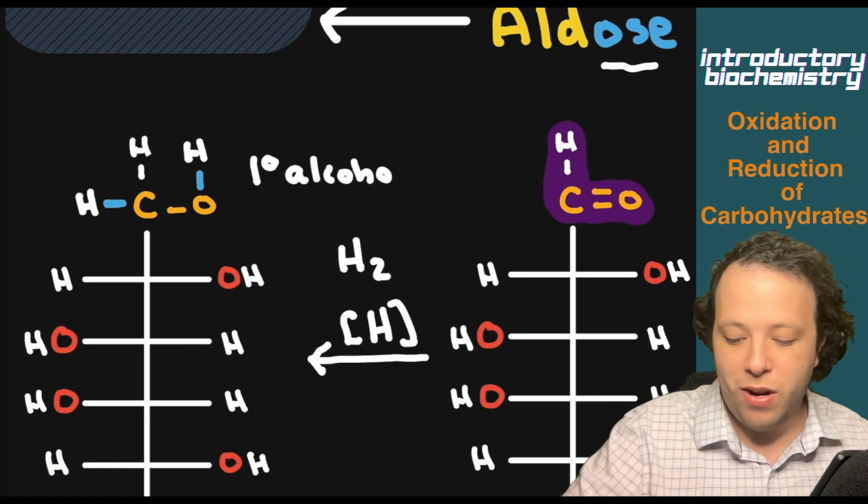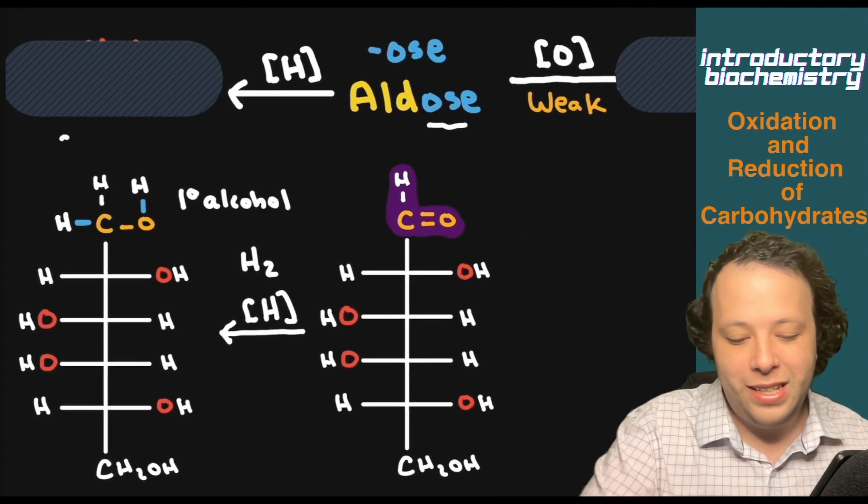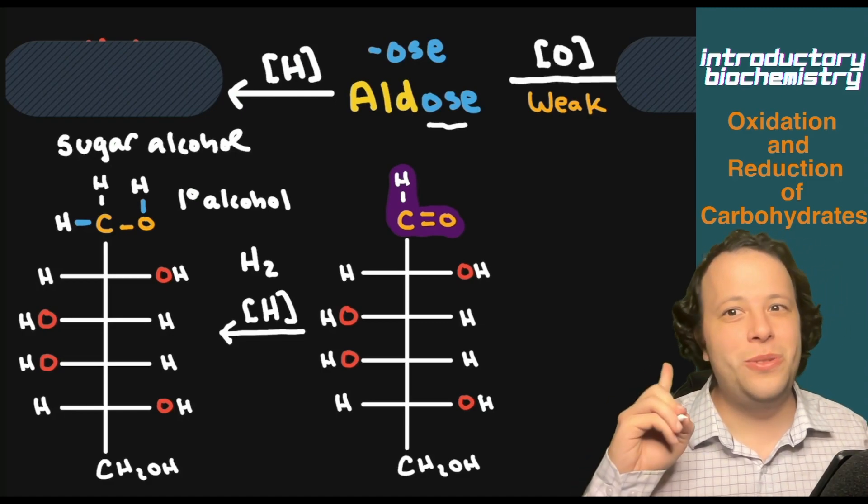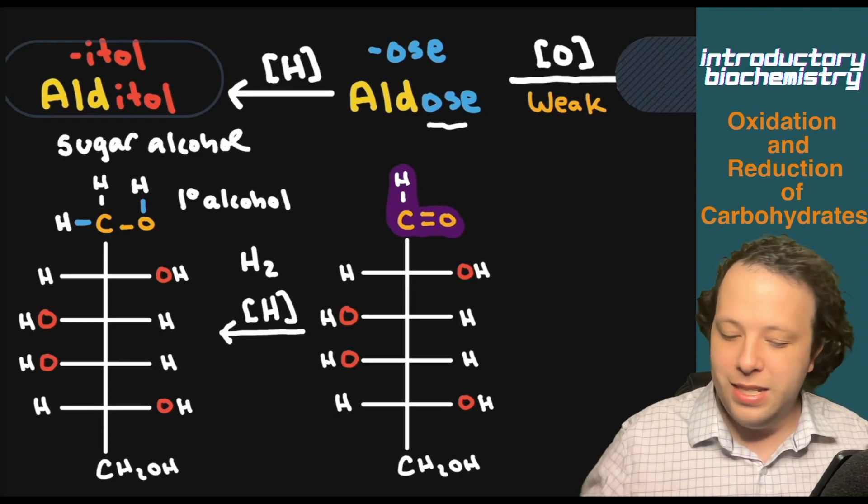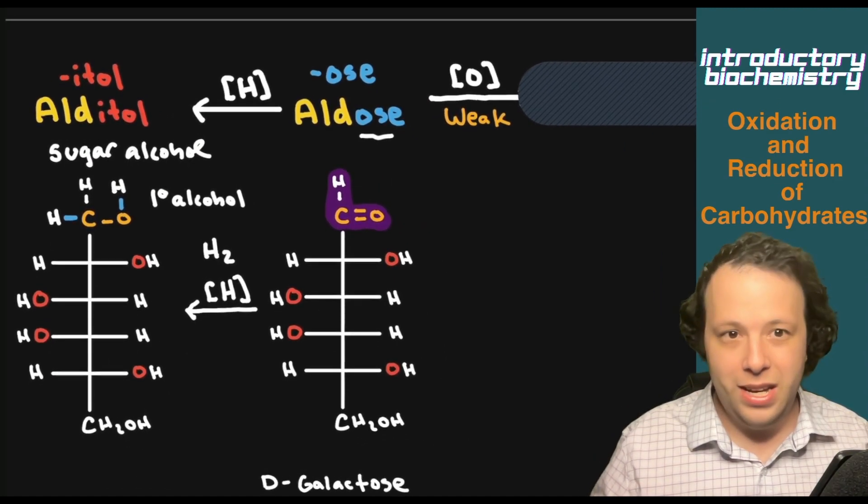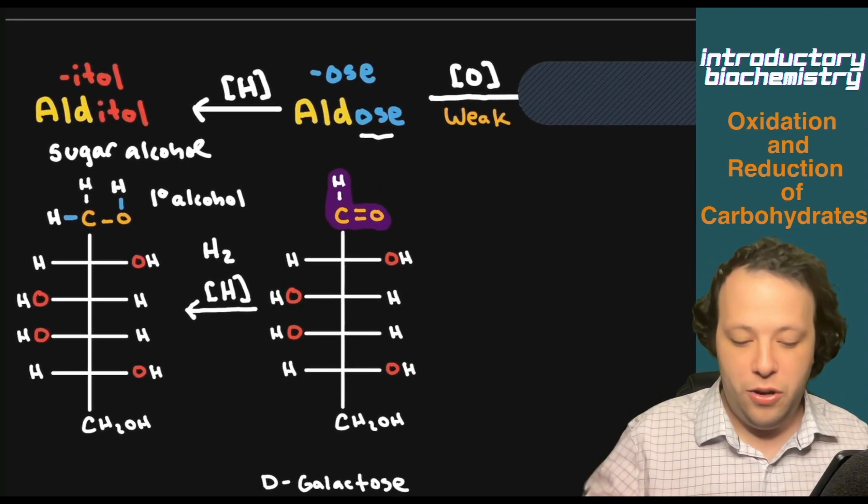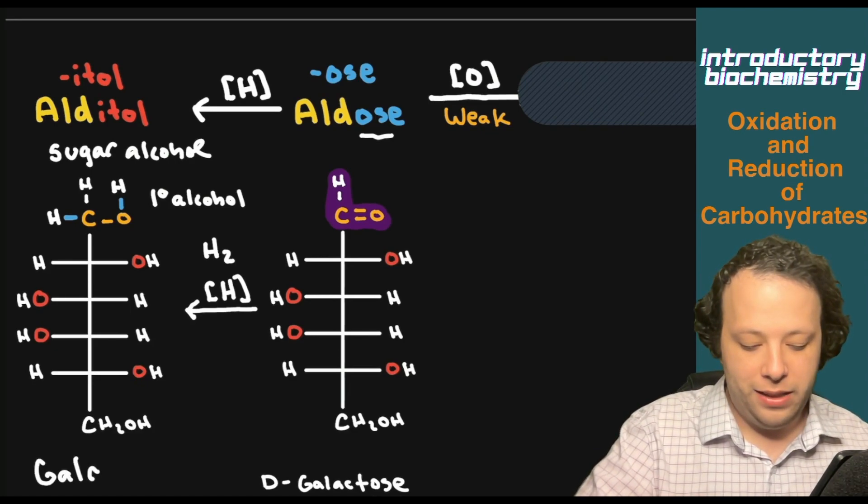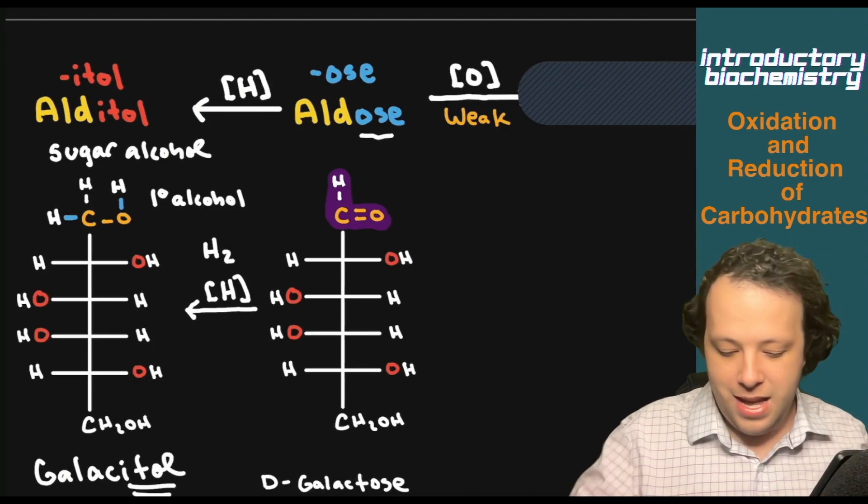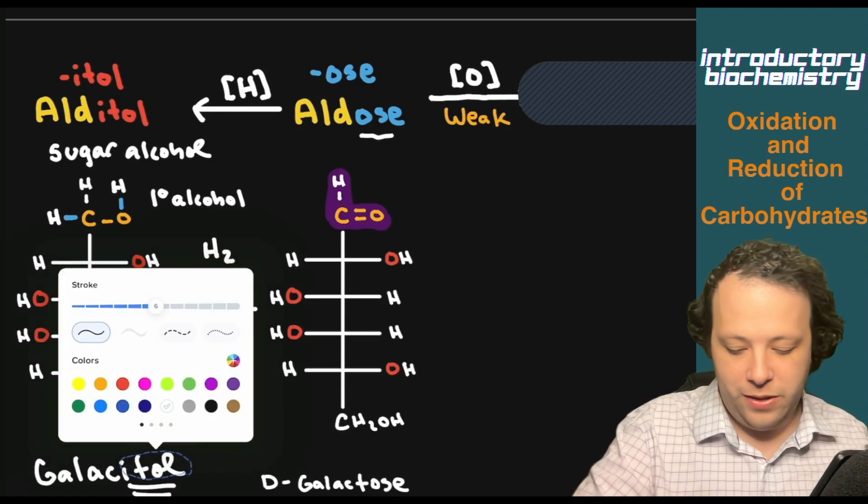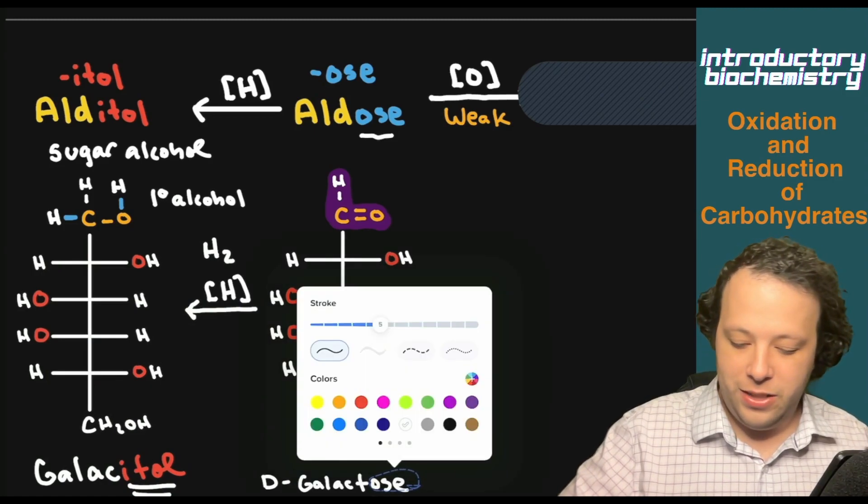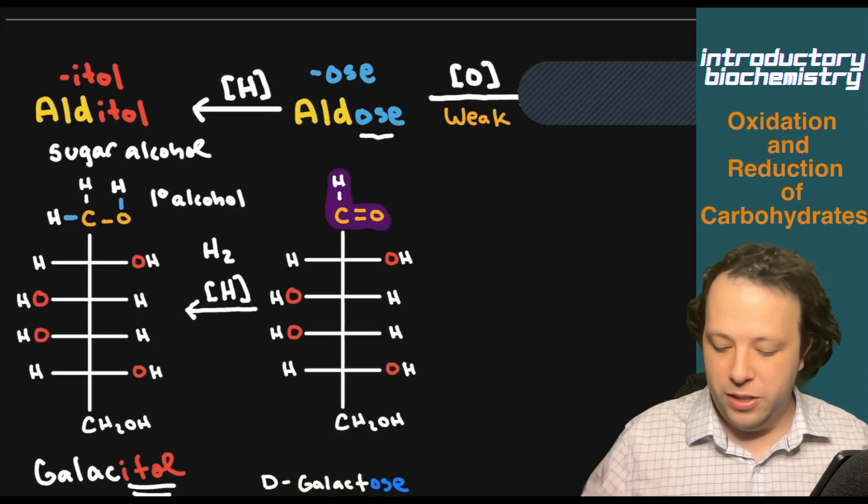That one degree alcohol is a product of reduction. Specifically, this is known as a sugar alcohol. It went from a simple sugar to a sugar alcohol, which is known as an alditol, which has the ending -itol. Before it was galactose, so we're going to keep the beginning part and it's going to be galactitol, with that I-T-O-L ending.